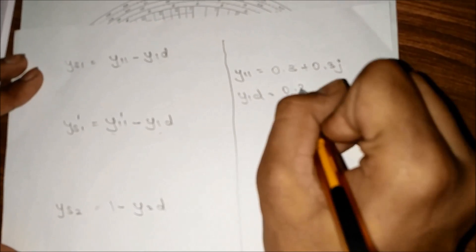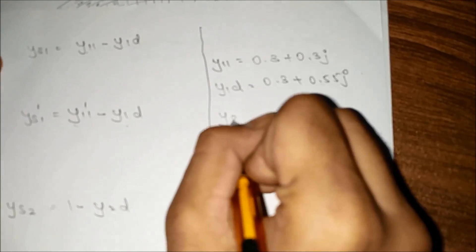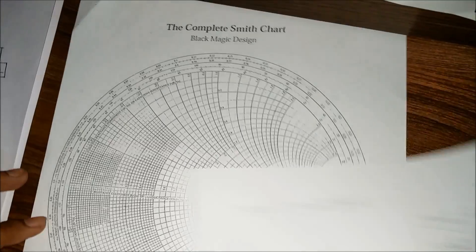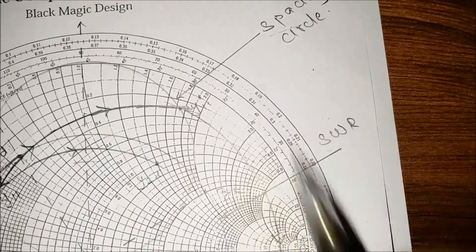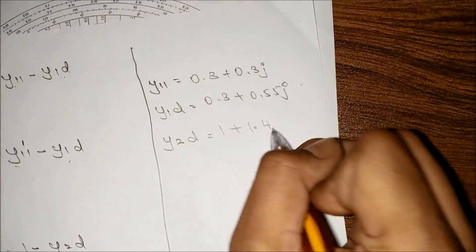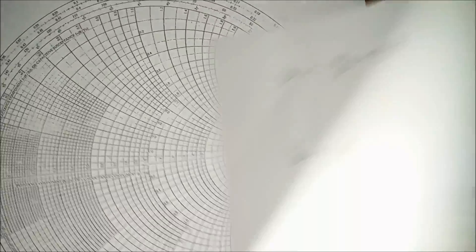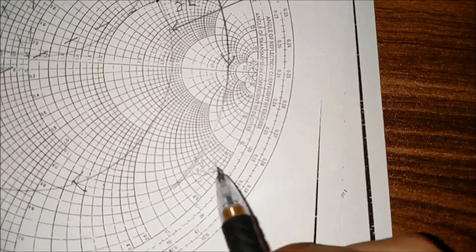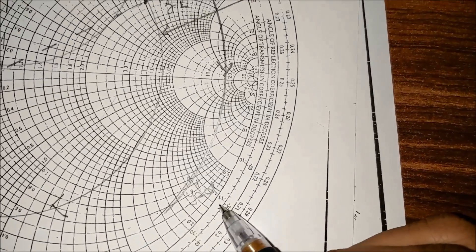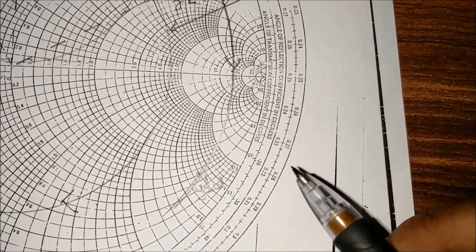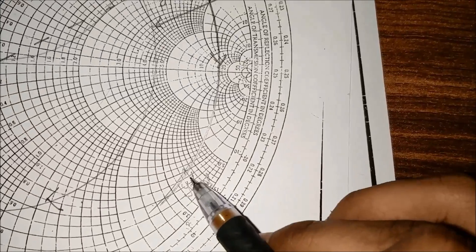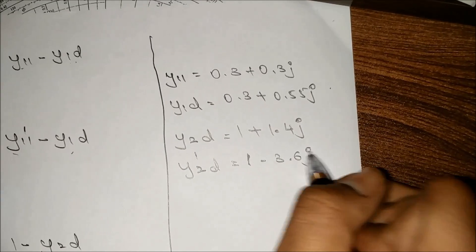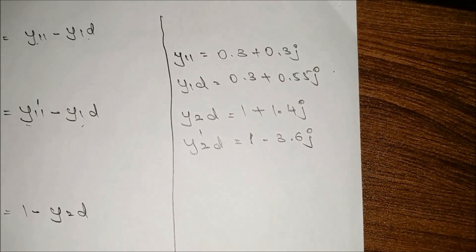y1d is at 0.3 and it's between 0.5 and 0.6, so it will be 0.3 plus 0.55j. y2d is somewhere over here at 1 plus 1.4j. y2d dash is 1 and it corresponds to approximately 3.6, so 1 minus 3.6j. We are done, so we calculate the parameters.